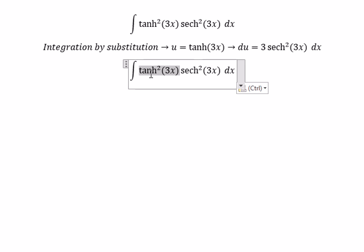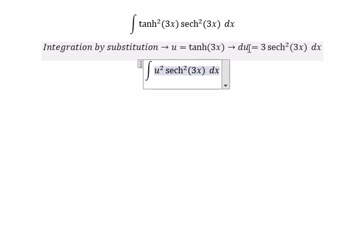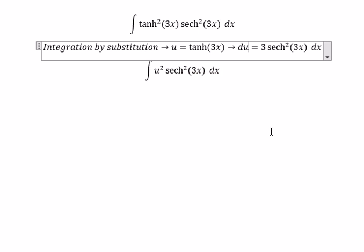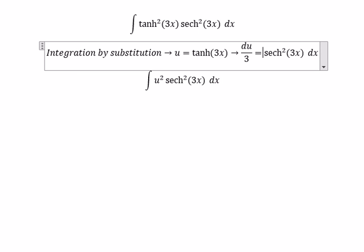So this one we change for u. You got power 2 here. Sec of 3x squared dx. We have the number 3. So we divide both sides with number 3. So we change for du over 3.